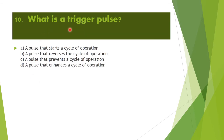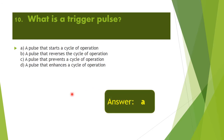Next question: What is a trigger pulse? Option A: a pulse that starts a cycle of operation. Option B: a pulse that reverses the cycle of operation. Option C: a pulse that prevents a cycle of operation. Option D: a pulse that enhances a cycle of operation. A trigger pulse is a pulse that starts the cycle of operation. Option A is the right answer.